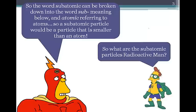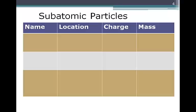So what are our subatomic particles? We have three: the first is the proton, the second is the neutron, and the third is the electron.